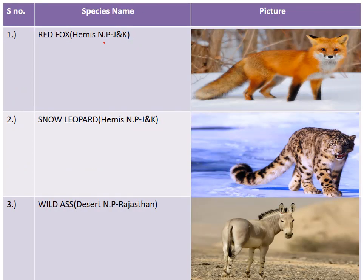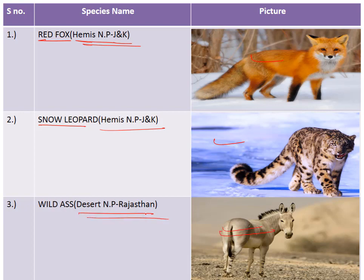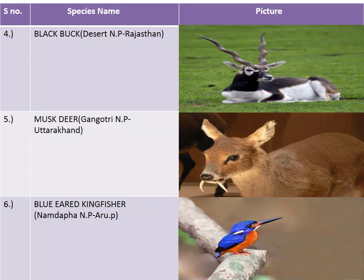Here is a recap of key species and their national parks. The red fox and snow leopard belong to Hemis National Park in Jammu and Kashmir. The wild ass and blackbuck belong to Desert National Park in Rajasthan. The musk deer belongs to Gangotri National Park in Uttarakhand.